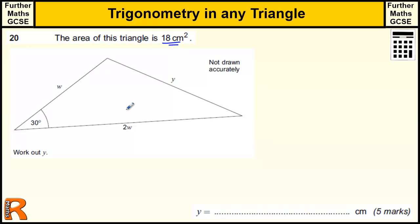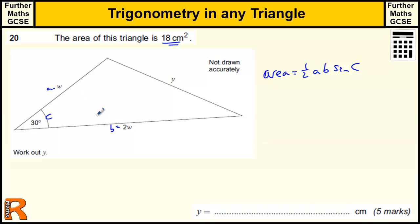That formula is given to you at the front of the exam paper: the area equals a half AB sin C. So if this is angle C, this is little a, and this is little b — it doesn't actually matter where A and B are. The area, which is 18, equals a half of A (which is W) times B (which is 2W) times the sine of the angle between them, which is 30 degrees.